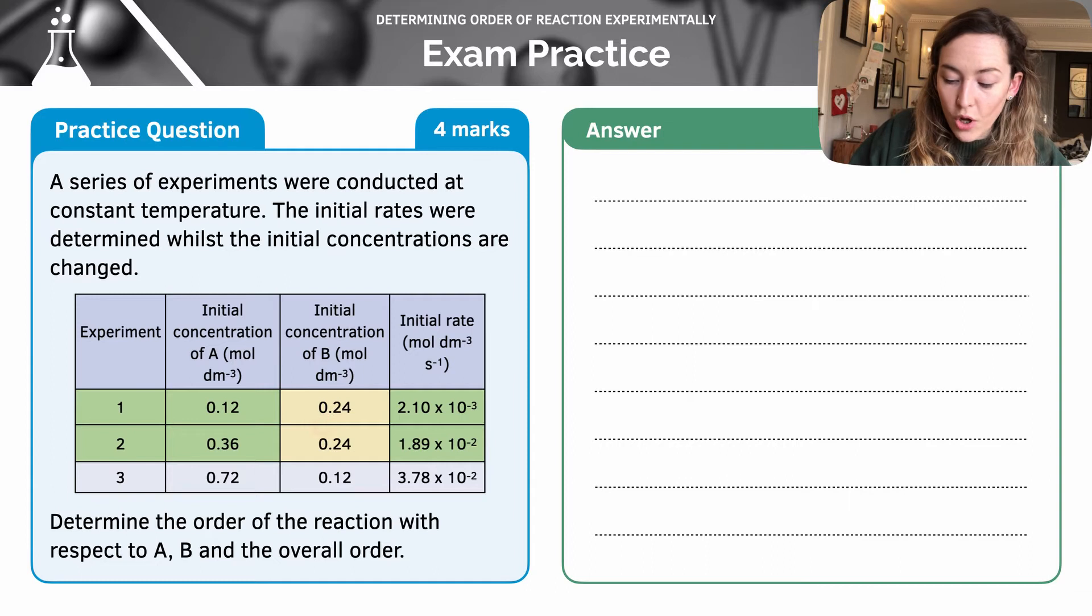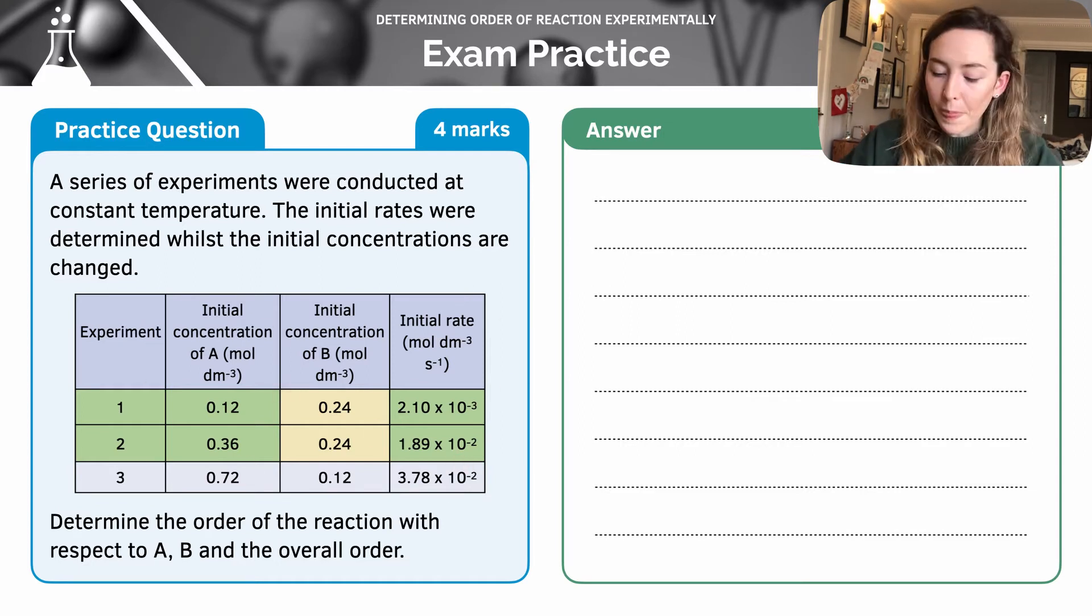I can now compare and see how, by changing the initial concentration of A, how does that affect my rate? And so I can determine the rate with respect to A. I can see here that the initial concentration of A is increasing by three times, going from 0.12 to 0.36.